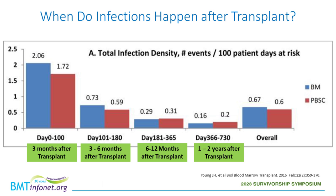Between three and six months after transplantation, the risk is still significant but less so than the first three months. Between six months and one year after transplant, the risk is still present but again lower. Once past the first and second years after transplantation, the risk decreases significantly if everything went well — meaning no disease recurrence, no graft-versus-host disease, and no longer receiving immune suppression. However, the risk is still higher than someone who has never received a transplant.